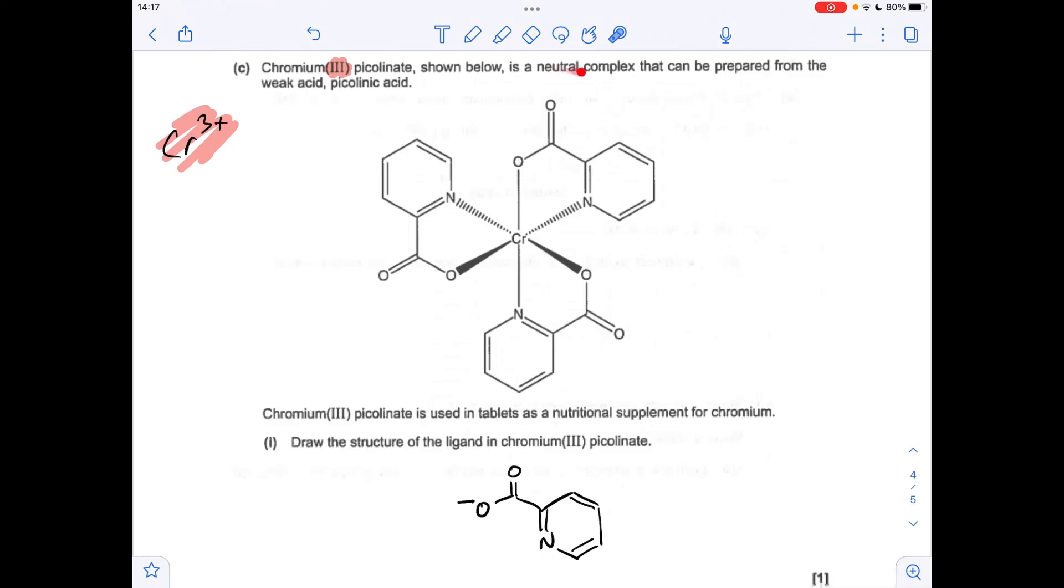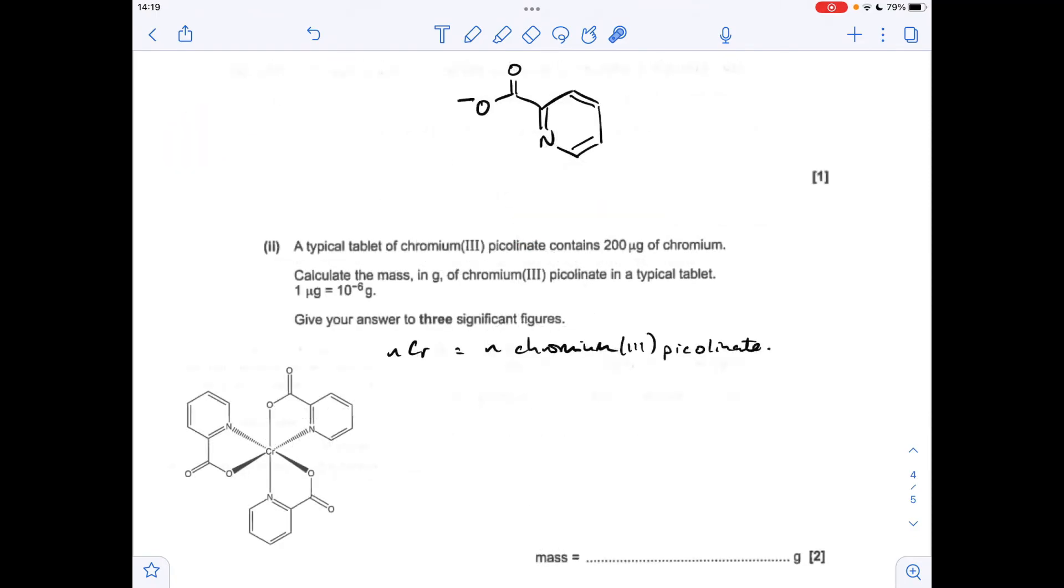So the structure of the ligand must be that. It's attaching via the lone pair on this O⁻ and the lone pair on this nitrogen. Remember it's a dative covalent bond that's formed, or a coordinate bond you would call it, between here and here.